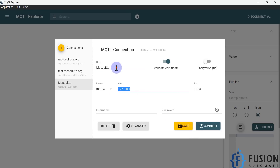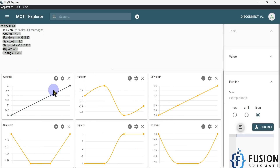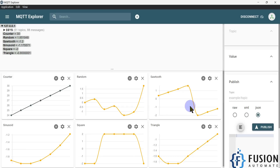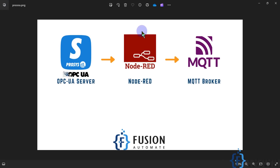If I connect with the Mosquitto broker, you can see I am getting the data and you can see the graph as well. I have done everything with the help of Node-RED. Here you can see the flow — I have connected with the OPC-UA server, written functions to publish the data to the MQTT broker. This is the solution for converting or publishing OPC-UA data to an MQTT broker.